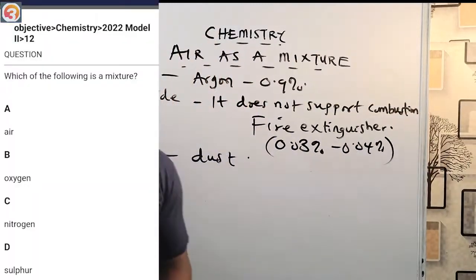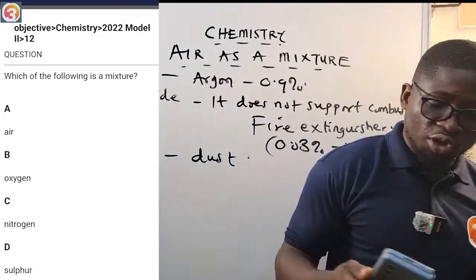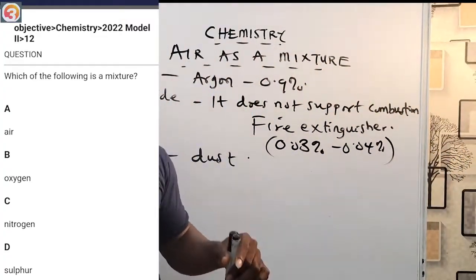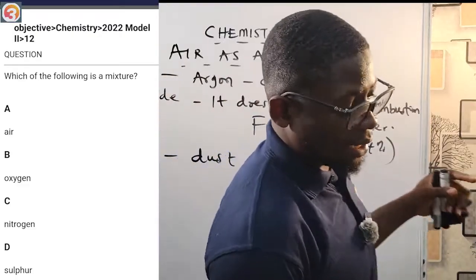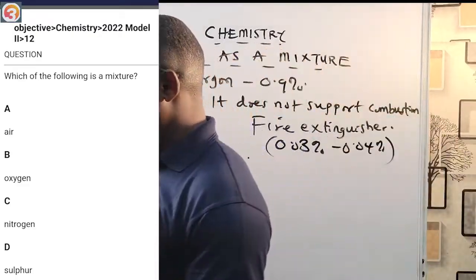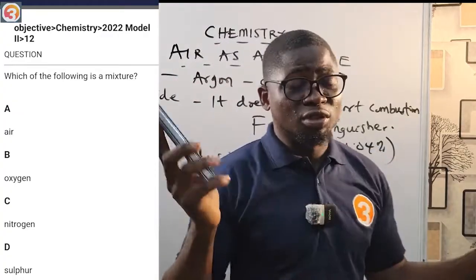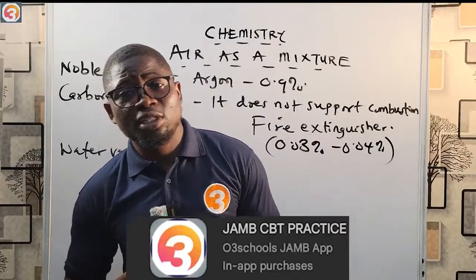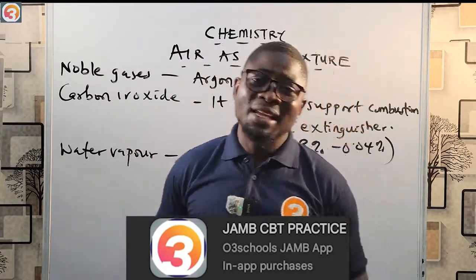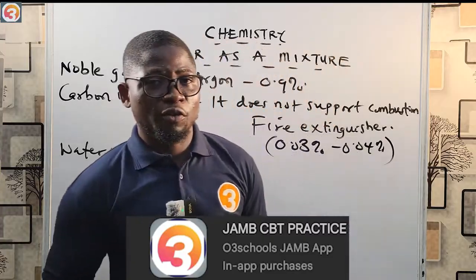Now let us go to the O3 School Jam app and answer that question. We defined air as a mixture of gases. In the 2022 question number 12, they asked: which of the following is a mixture? A — air, B — oxygen, C — nitrogen, D — sulfur. The correct answer is A — air. There are many other questions on this app. Go to the Play Store, download the O3 School Jam app, like this video, comment, keep sharing, and we'll see you in the next episode. Thank you for watching.